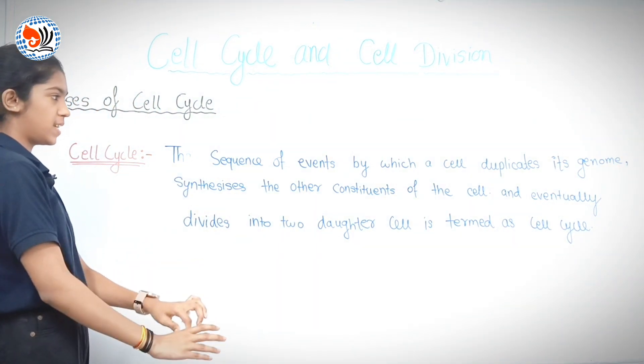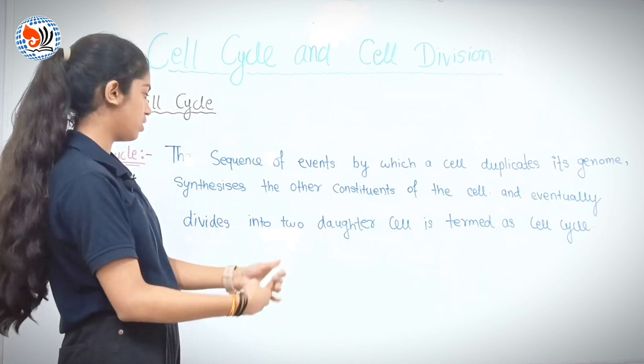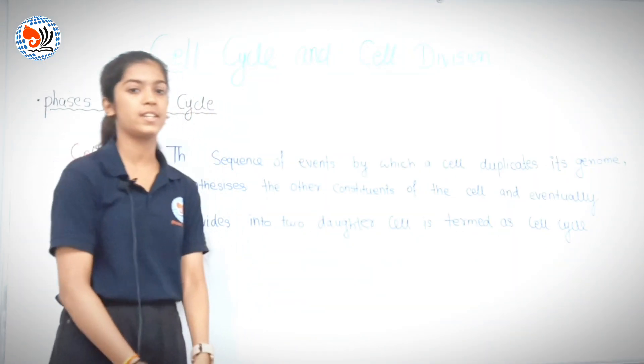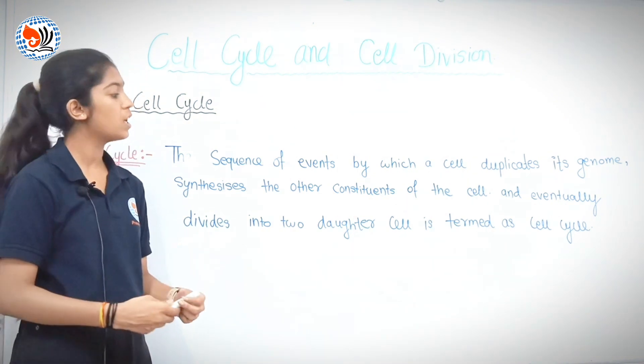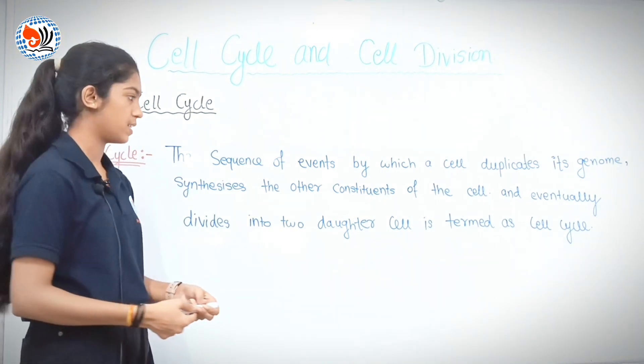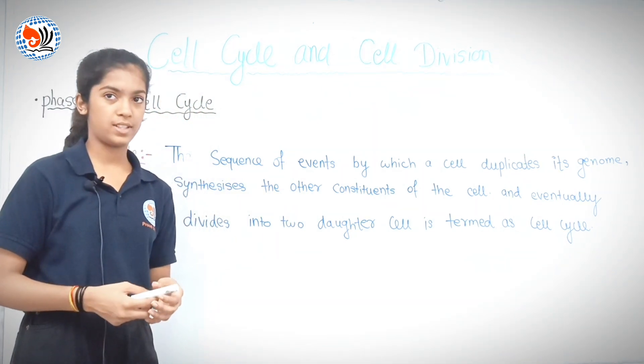This sequence of events is in which the cell duplicates its DNA, synthesizes other constituents proteins, macromolecules, which help the cell to grow and increase in size. And finally, cell division happens into two daughter cells.